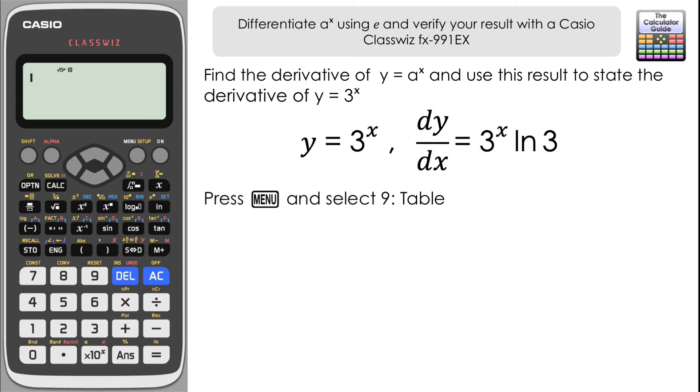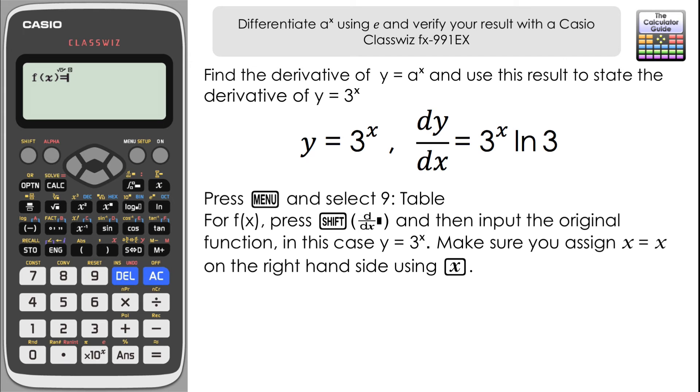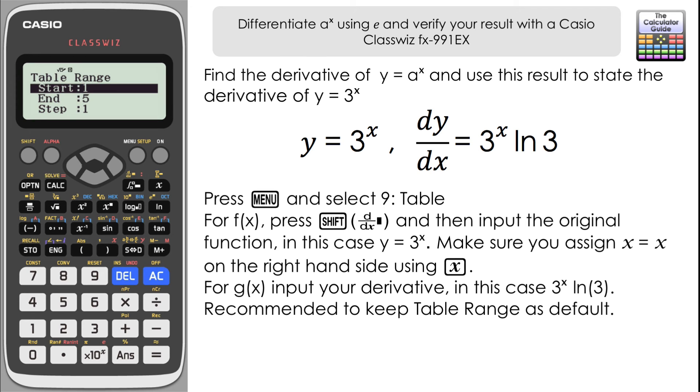On the calculator, it's menu and then the best way to verify two functions really is to use table mode and put a number of values in to check that you get the same result. So we're going to go to nine table. Now we're going to input our f(x). We're going to use the derivative feature on the ClassWiz, so it's shift and this button here. And now we want to put in our original function, which is three to the x. And then there's a little bit on the side here where we need to input values of x. We're just going to say x equals x because later on that will allow us to put in several different values of x. Now for our g(x), what we're going to do is put in our derivative we would have found. So that would be three to the power of x multiplied by the natural log of three.